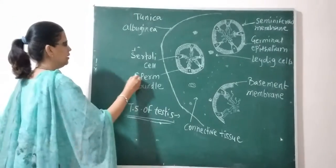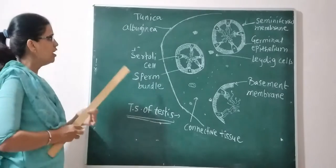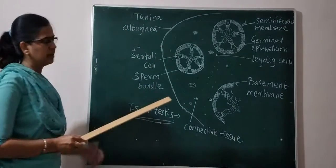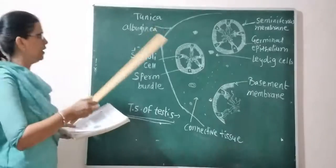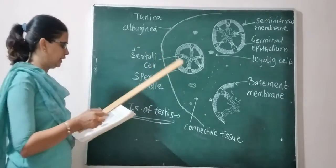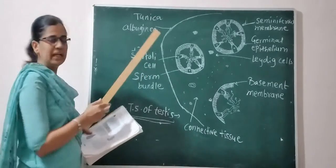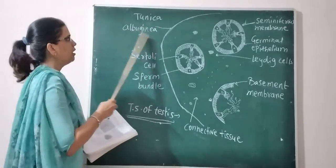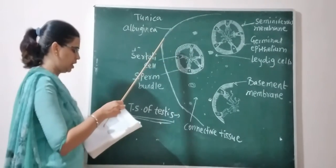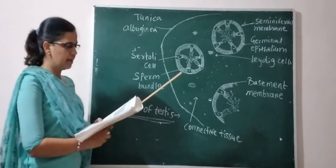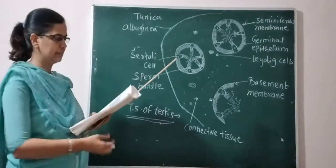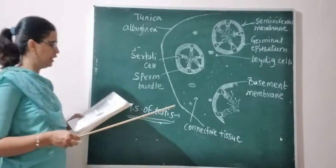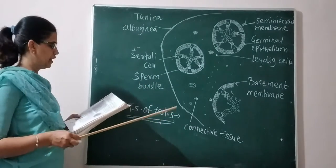Looking at the transverse section of the testes, there are several parts. The outer layer is the tunica albuginea, and other layers include the tunica vaginalis and tunica vasculosa — these are the membranous and vascular layers. The tunica albuginea divides each testis into about 200 to 300 testicular lobules.